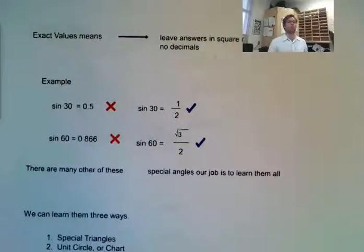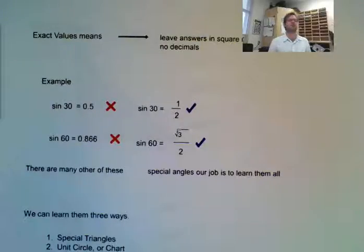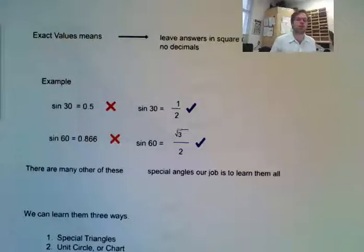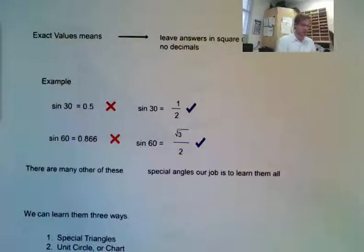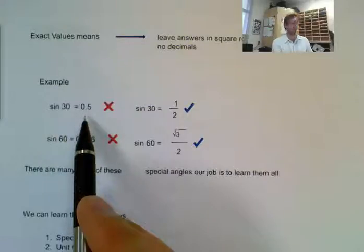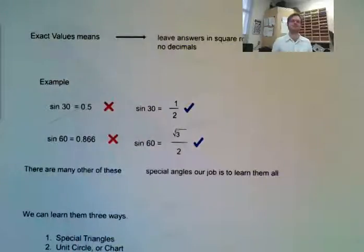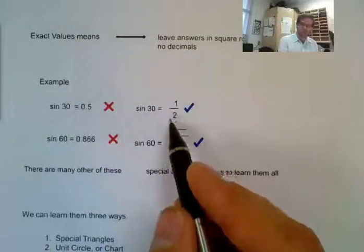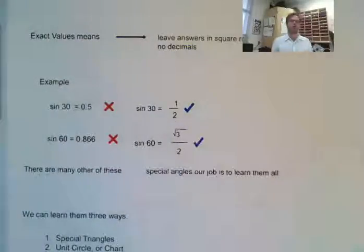To start off, we have to know what is an exact value. An exact value is when we leave our answer in square root or fraction form, or a combination of both. That means no decimals. So if I punched in sine 30 in my calculator, I'm going to get 0.5. We do not want this — this is not an exact value. An exact value would be 1 over 2.